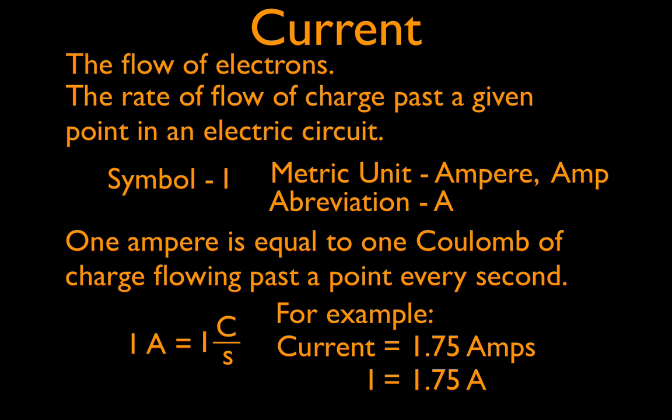I like to use a more specific definition so we can do calculations with current. Current is the rate of flow of charge past a given point in an electric circuit. Rate implies we're talking about time, and the flow of charge. The unit for charge is the coulomb, so it's the number of coulombs that pass a given point in the circuit every second.